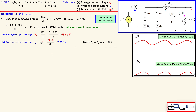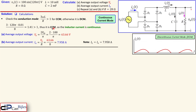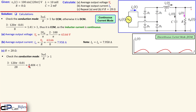Now consider the situation where the resistor changes from 8 ohms to 28 ohms. We need to check if this changes the conduction mode. Recalculating: 3 × 120π × 0.01 / 28 ≈ 0.404, which is less than 1. That means we have discontinuous current mode (DCM), so the inductor current is no longer continuous.